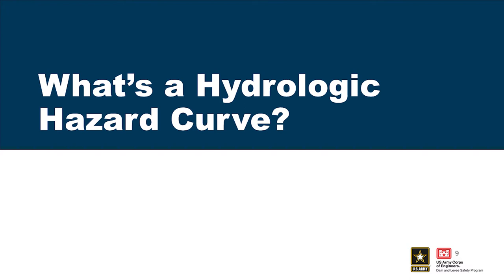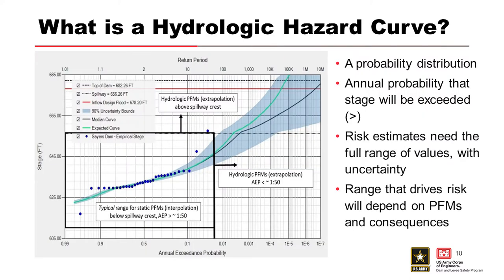What is a hydrologic hazard curve? Here is one. On the y-axis of this graphic we have stage, which we often use synonymously with reservoir water surface elevation. We can also have this type of curve for levees, where we would be looking at river stage. On the x-axis is the annual probability of exceedance.